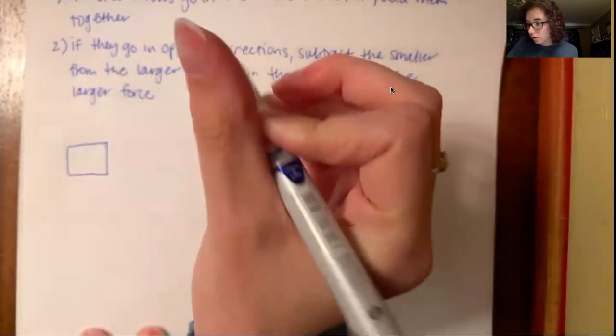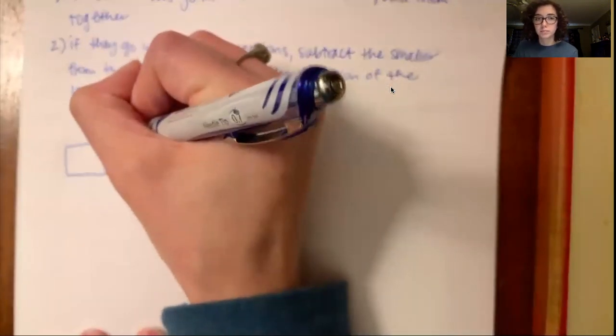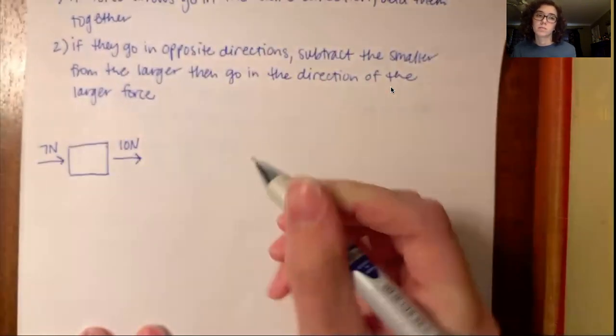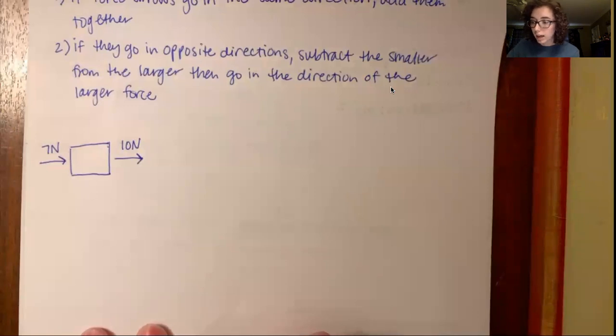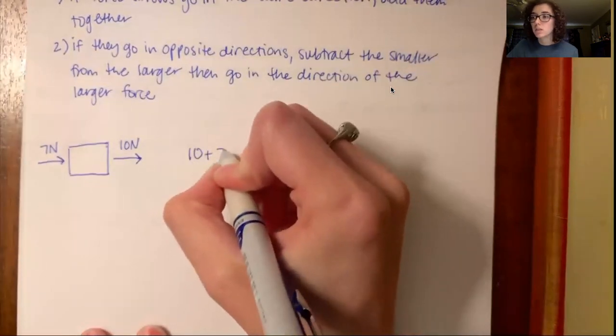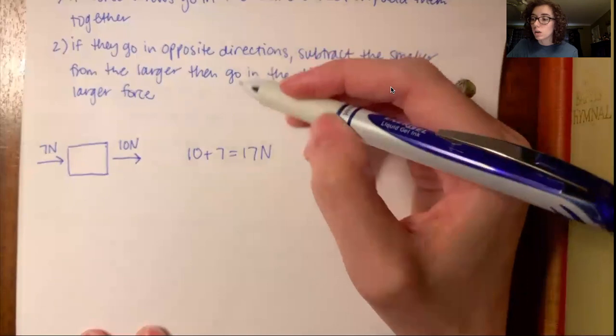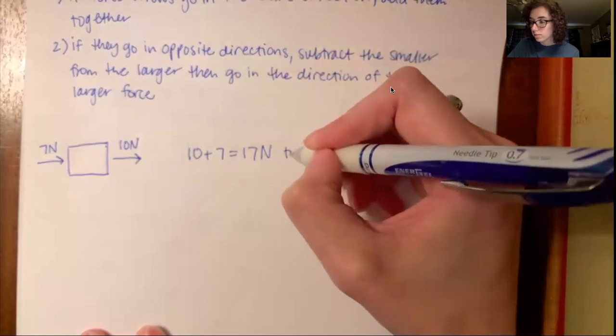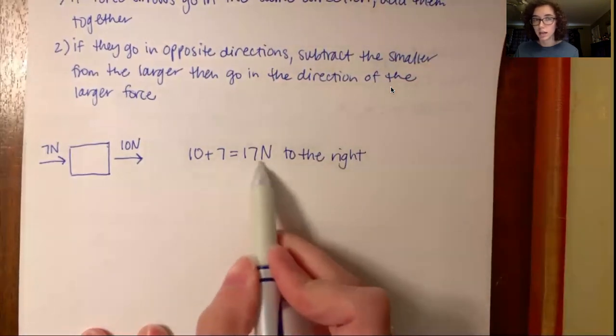So let's say we have a force 10 Newtons to the right, and 7 Newtons to the right. Okay, so we have 7 Newtons to the right and 10 Newtons to the right. So we're going to add them together. 7 Newtons plus 10 Newtons equals 17 Newtons to the right. Okay, so we have the strength, 17 Newtons to the right.